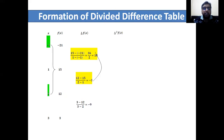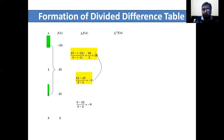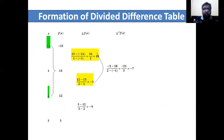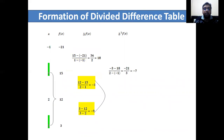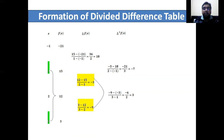For the second divided difference, we take the difference of the first divided difference values. We take minus 3 and 18, but we skip x0 — in the second divided difference table we use x2 minus x0, skipping intermediate values. The result is minus 7. Similarly, the next second divided difference value is computed from the next two adjacent first divided difference arguments.